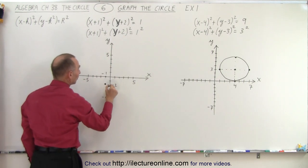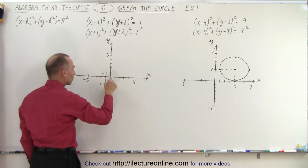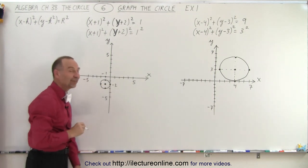Notice the radius is equal to 1. So we move one point to the right, one point to the left, one point up, one point down. If we connect those in a circle, there we go. A nice little cute circle with radius equal to 1.